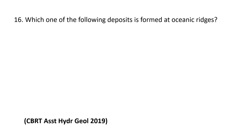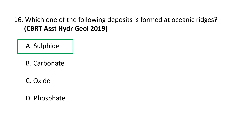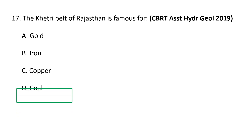Next question: which one of the following deposits formed at oceanic ridges? A) Sulfide, B) Carbonate, C) Oxide, and D) Phosphate. Sulfide deposits are formed at oceanic ridges. The neovolcanic zones of mid-oceanic ridges host seawater-derived hydrothermal systems forming seafloor massive sulfide deposits, also known as SMS deposits. These deposits have high concentrations of base metals and potentially economic enrichment of a wide range of trace elements. A, sulfide, is the correct answer.